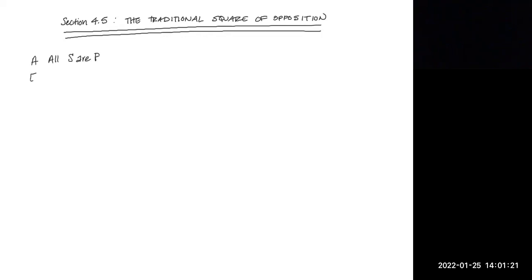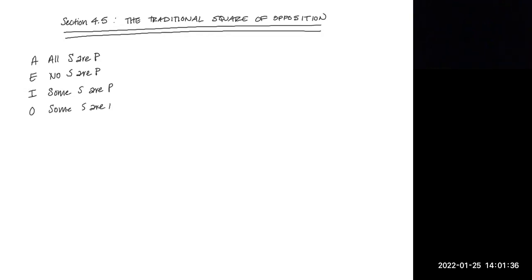Let's start with a reminder. An A statement is 'All S are P.' An E statement is 'No S are P.' An I statement is 'Some S are P.' And an O statement is 'Some S are not P.'